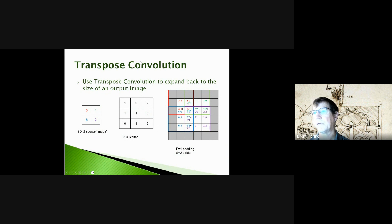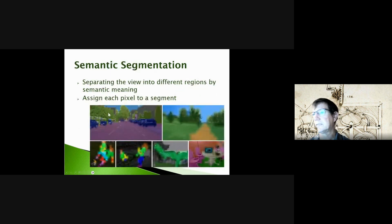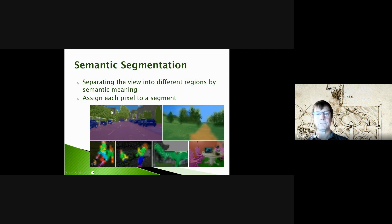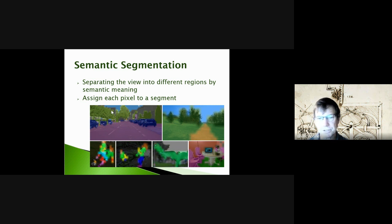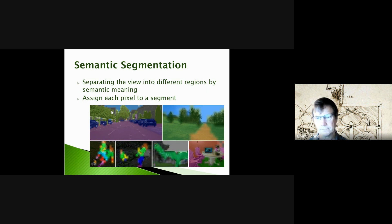Before we can do semantic segmentation, we need to talk about transpose convolution. With object detection, we started with a high-resolution image — maybe three RGB channels — then reduced it to smaller and smaller dimensions through convolutional net layers and max pooling, using filters to match features in the image, giving us more channels but smaller dimensions.